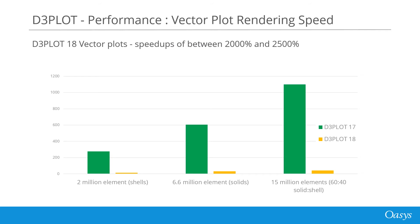If we now compare the redraw times for vector plots for the same three models, which vary in size from 2 to 15 million elements, then the changes in version 18 have resulted in speedups of between 20 and 25 times and have greatly enhanced the usability of vector plots for large models.